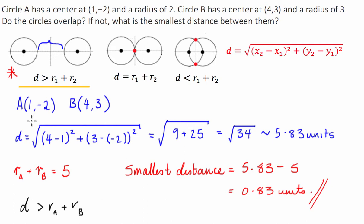So what we did then is we found the difference between the distance and the combined radii to find what the smallest distance was between them.